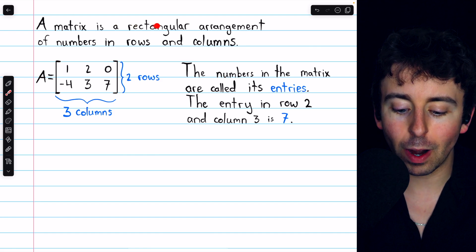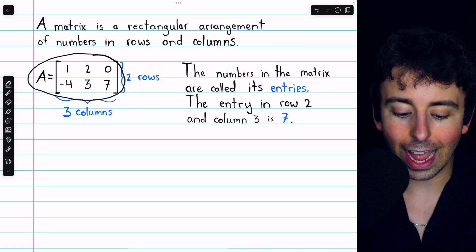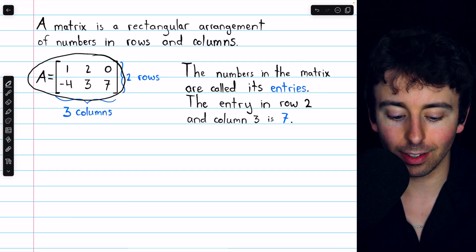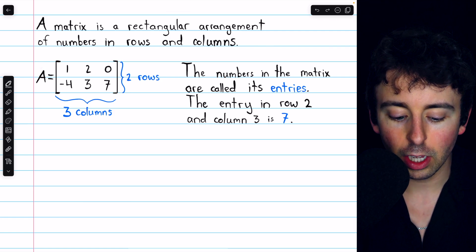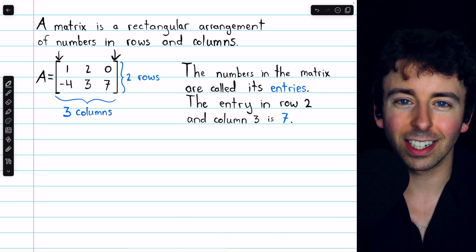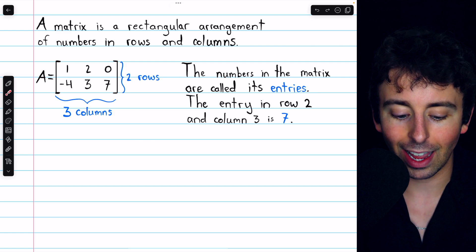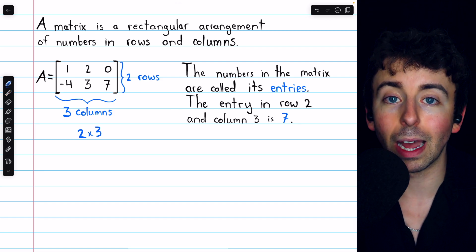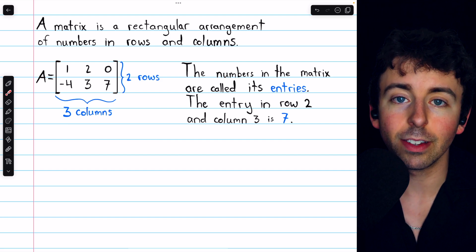Put simply, a matrix is a rectangular arrangement of numbers in rows and columns. Here's a matrix A. In the same way that we might assign a name to a number, like x, we can assign a name to a matrix, and a common choice is capital A. These numbers aren't just arranged in a rectangle — we use square brackets to section them off. Matrix A has two rows (the horizontal lines) and three columns (the vertical lines), so we say it has dimensions two by three. The numbers in the matrix are called the entries of the matrix.